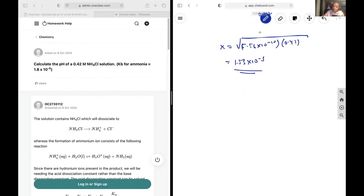And so next up, we simply plug that into our pH equation. We're going to get the negative log of 1.53 times 10 to the negative 5. And this is going to give us a value of 4.82 for the pH. And that's going to be our final answer.